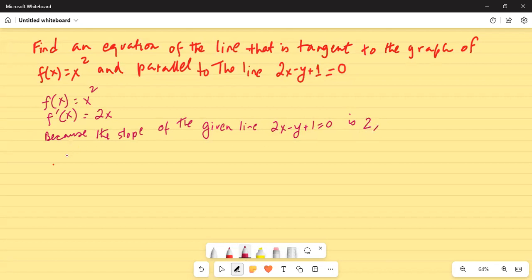We have f prime of x equal to 2x is equal to 2. Because the derivative of the function f(x) is 2x and that is the slope, and that is equal to parallel to the line 2x minus y plus 1 equal to 0. Therefore, 2x is equal to 2 and then x is equal to 1.